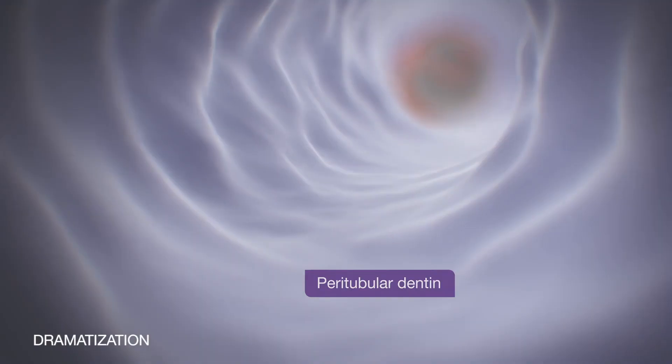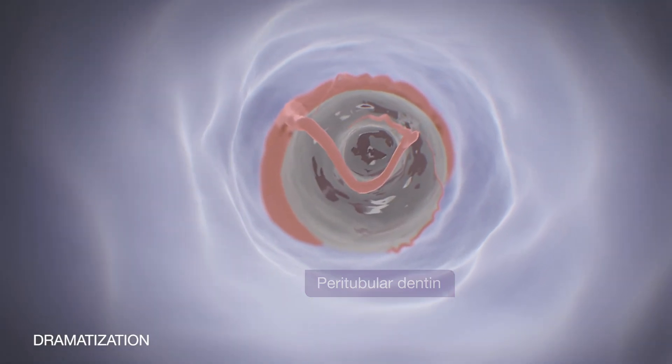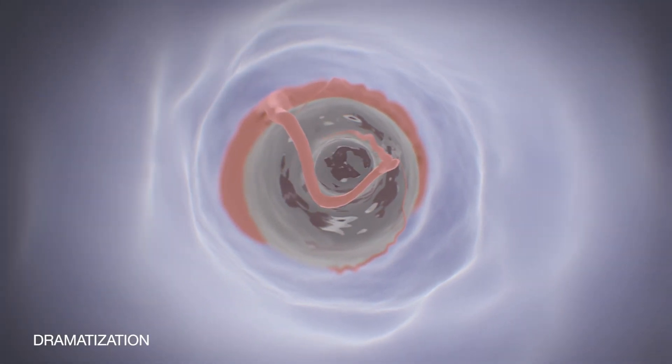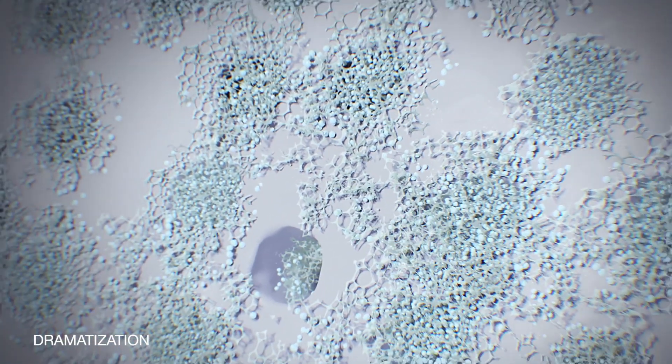The stannous ion becomes embedded within the paratubular dentin and extends deep into the tubule network to help prevent the stimulus from reaching the nerve. This robust occlusion of the dentin tubules is able to withstand exposure to dietary acids.